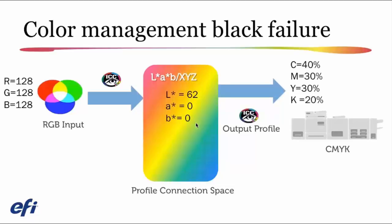When I take the LAB combination 62, 0, 0 through the output profile, the output profile thinks I want to print a mid-tone gray. One example of a formula or recipe that might come from the output profile for that mid-tone gray is something like 40% cyan, 30% magenta, 30% yellow, and 20% black — a perfectly neutral mid-tone gray in the CMYK output space.